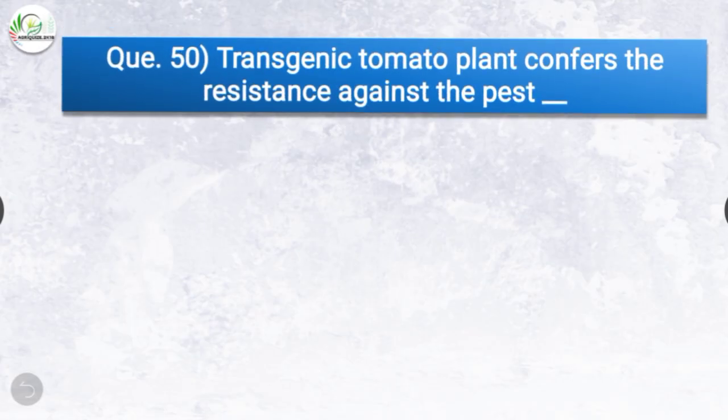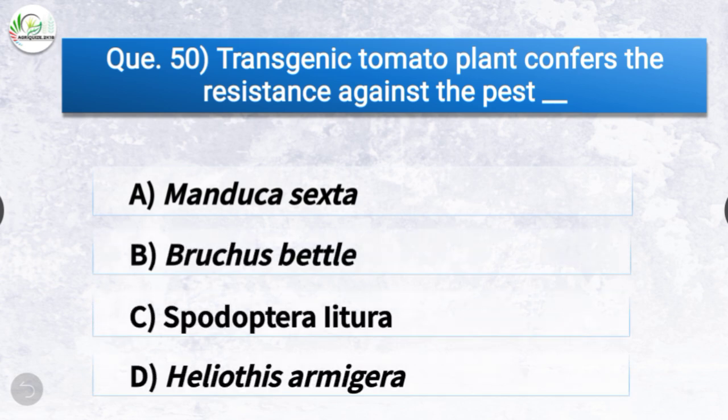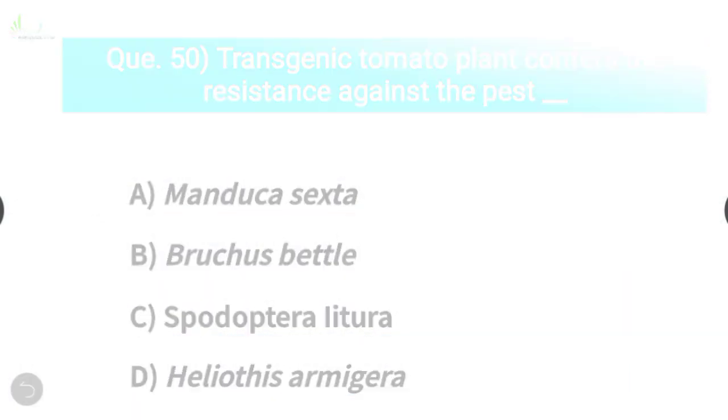Question number fifty, the last question: Transgenic tomato plant confers resistance against which pest? The options are Manduca sexta, Bruchid beetle, Spodoptera litura, or Helicoverpa armigera. The correct answer is option D, Helicoverpa armigera — transgenic tomato plant confers resistance against the pest Helicoverpa armigera.